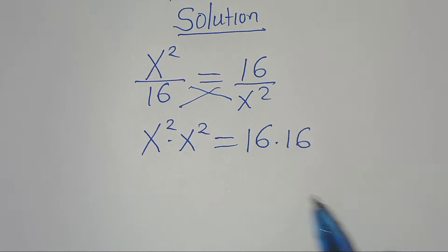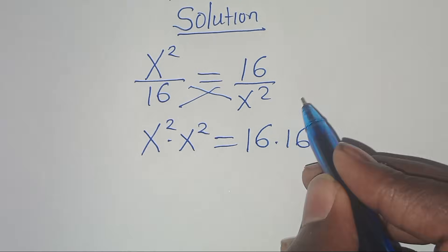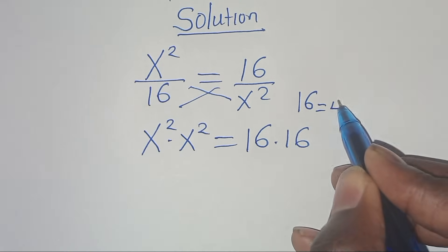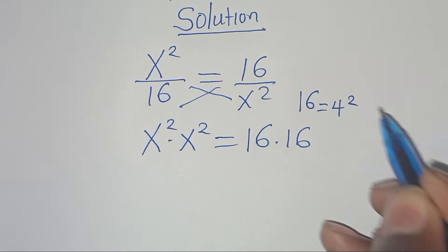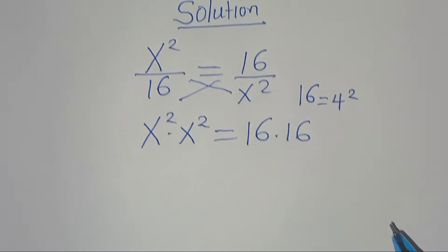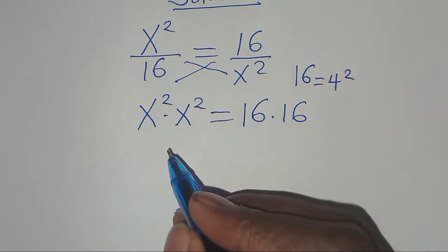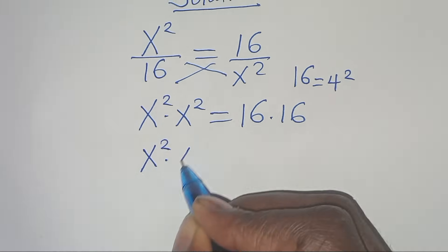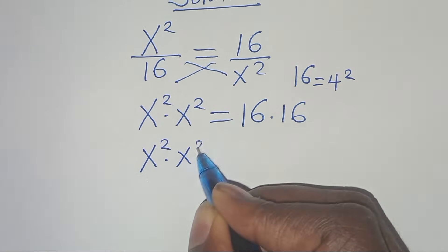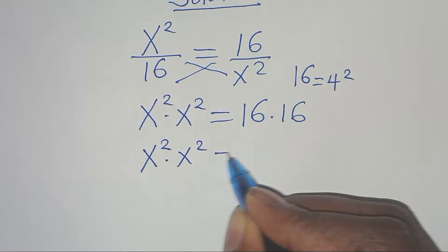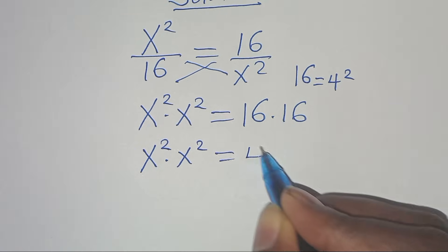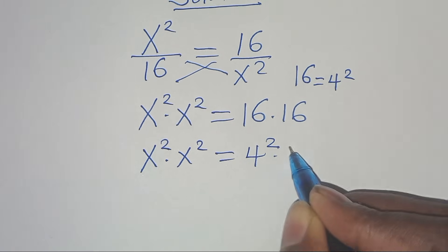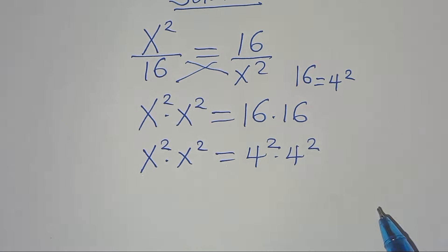We can express 16 as 4 to the power of 2. So this gives us x² times x² equals 4² times 4².